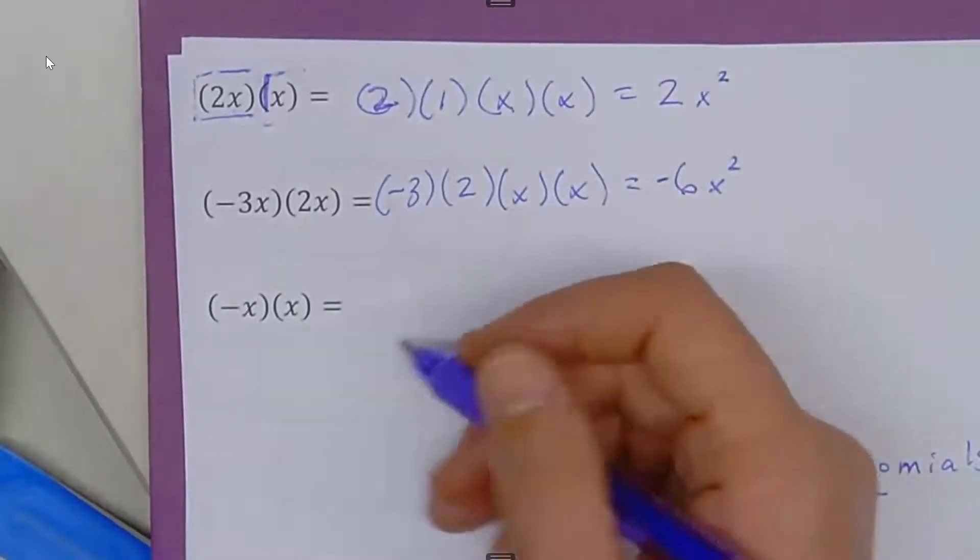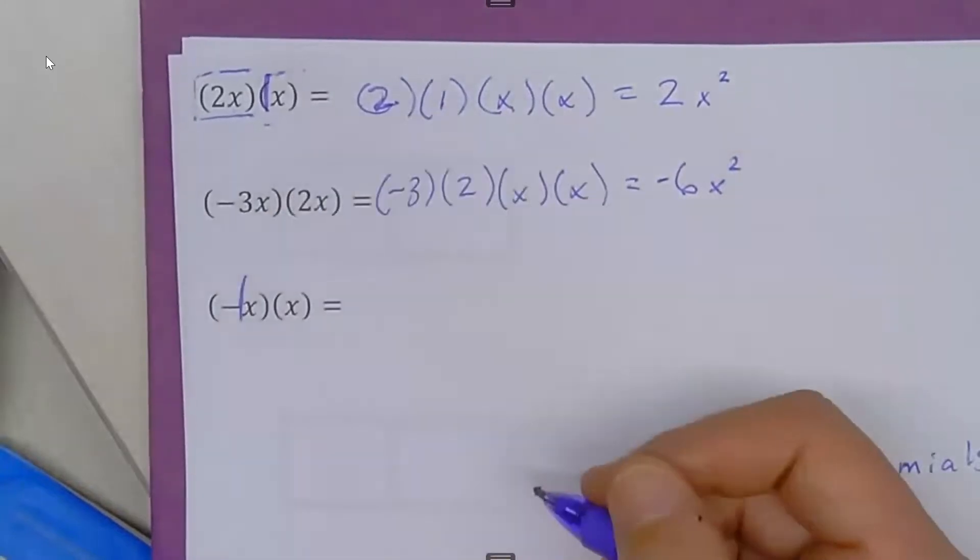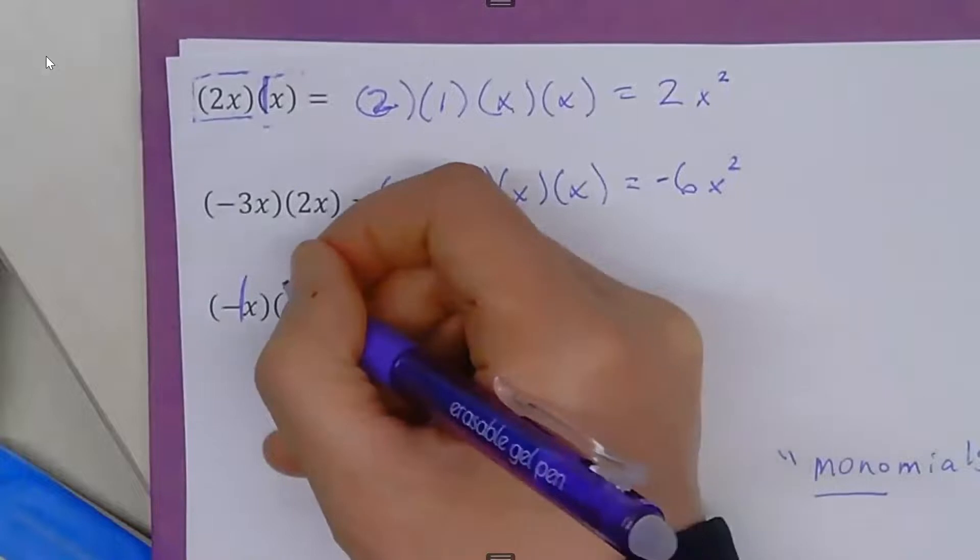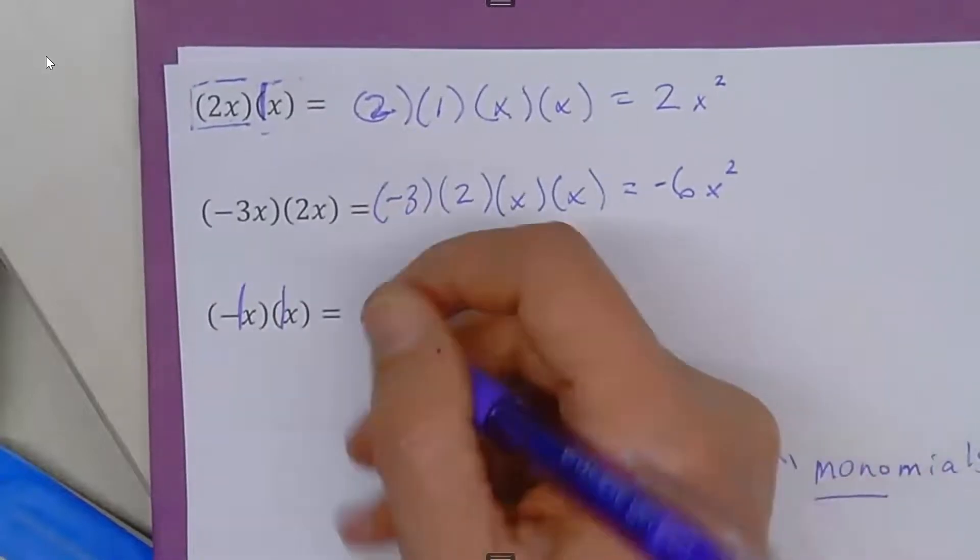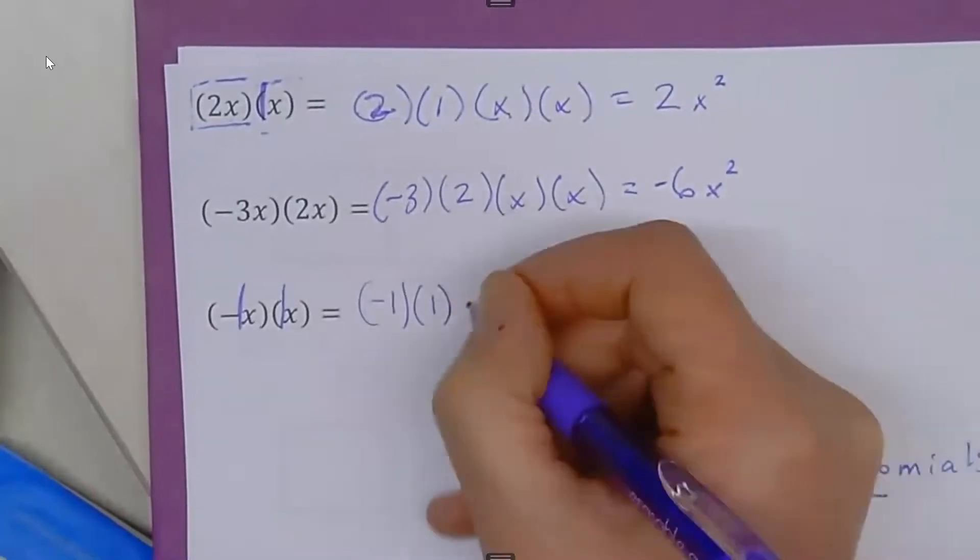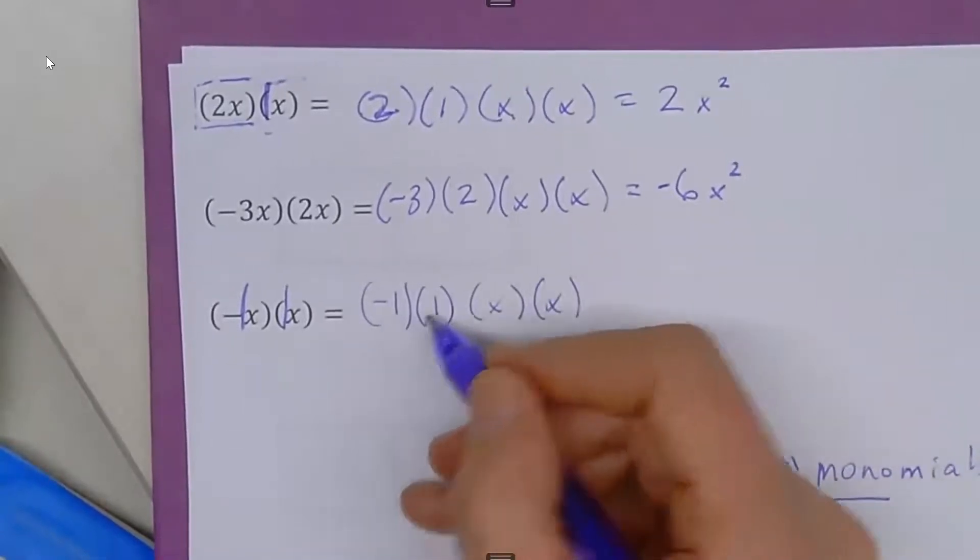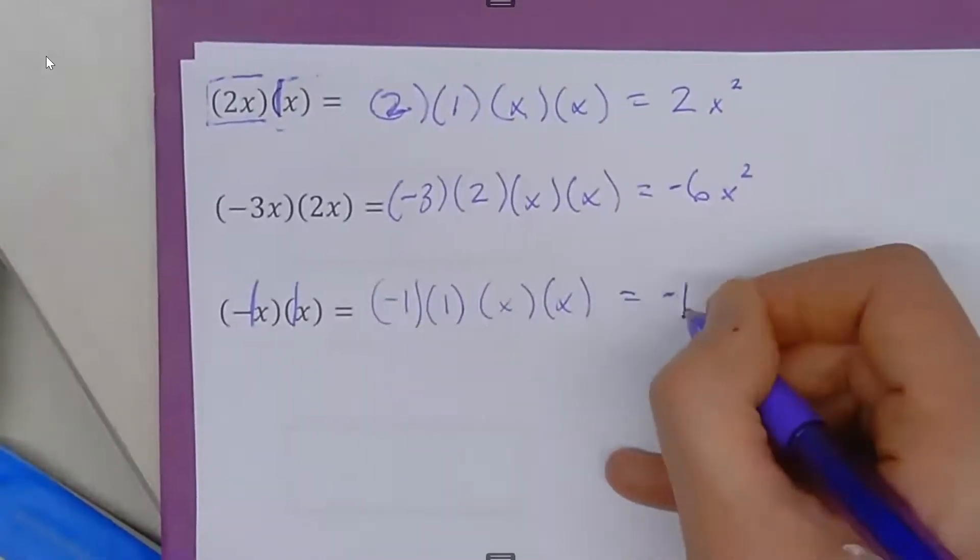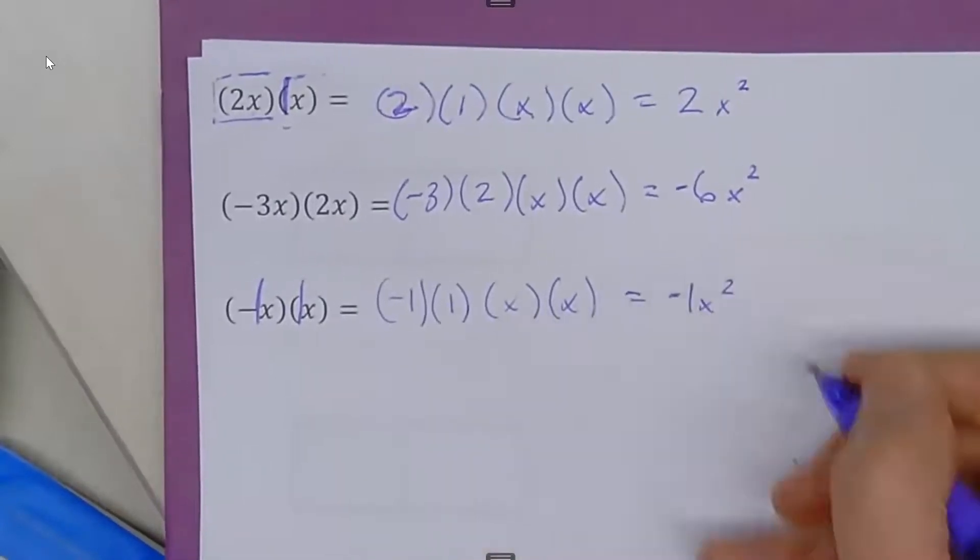Finally, we have a couple of naked x's here. Here we have negative, and then naked, so that's negative 1x. And then here we have a naked x, so that's positive 1x. We have negative 1 times 1 times x times x. Negative 1 times 1 is negative 1. Then x times x is x to the second power, or x squared.